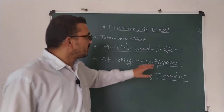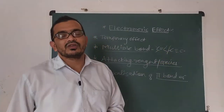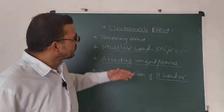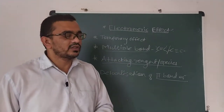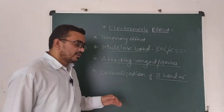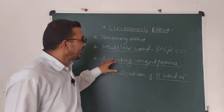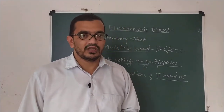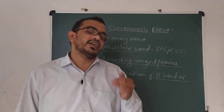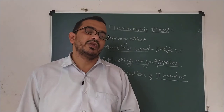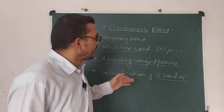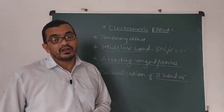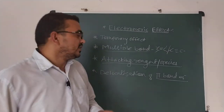To recap: the multiple bonded system — alkene system, carbon-carbon double bond, carbon-carbon triple bond — is required for this effect. This is very important. Attacking species or attacking reagents are also required; when reagents attack the double bond or triple bond system, only then does the electromeric effect take place.